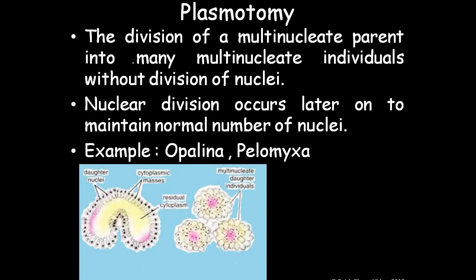Plasmotomy: the division of a multinucleate parent into many multinucleate individuals without division of the nuclei. Nuclear division occurs later to maintain the normal number of nuclei. The examples are Opalina and Pelomyxa. The multinucleate parent divides into individual multinucleate organisms.